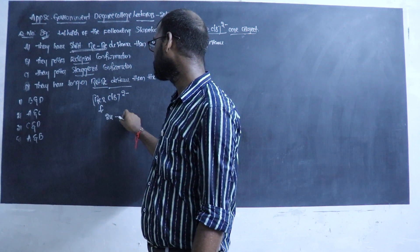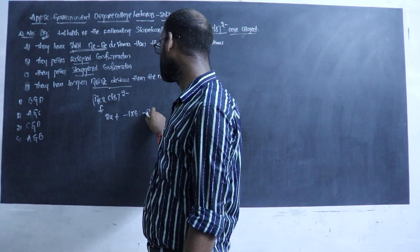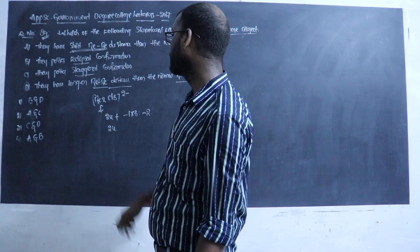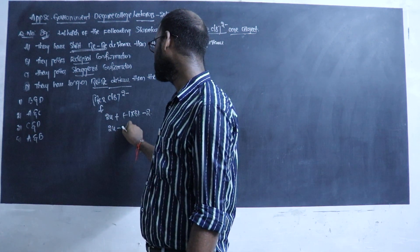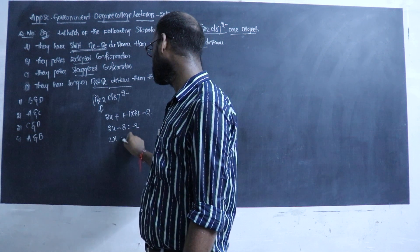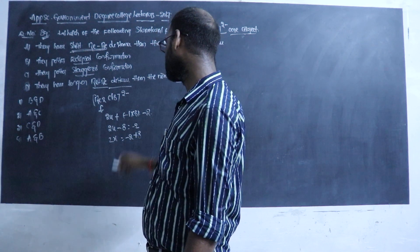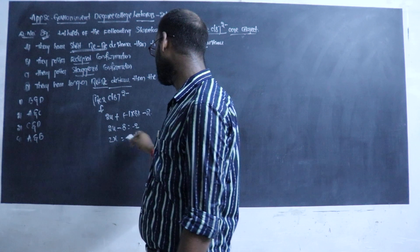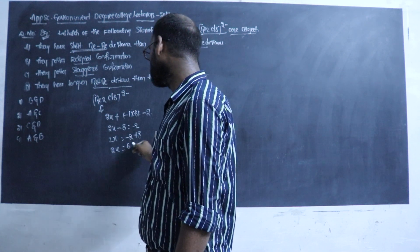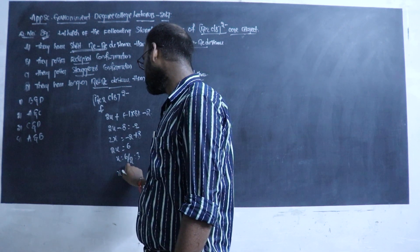Let's make the statement clear. So 2x plus (−1)(8) equals −2. Then 2x minus 1 into 8 equals −8. So 2x minus 8 equals −2. Then 2x equals −2 plus 8, which gives 2x equals 6, so x equals 6 divided by 2, therefore x equals 3.